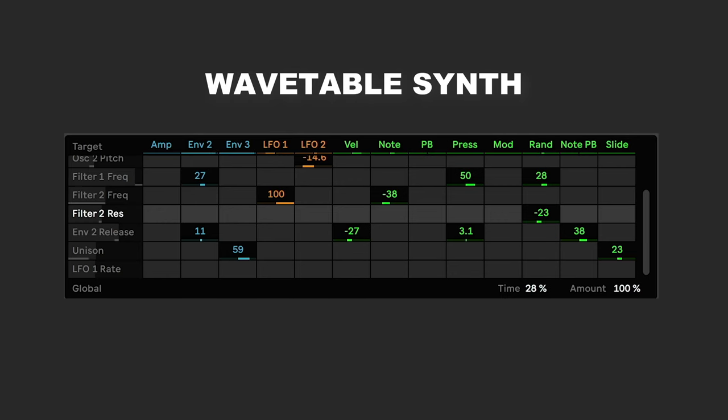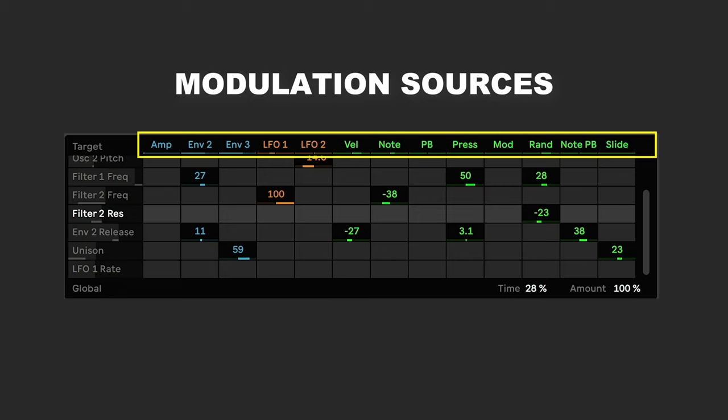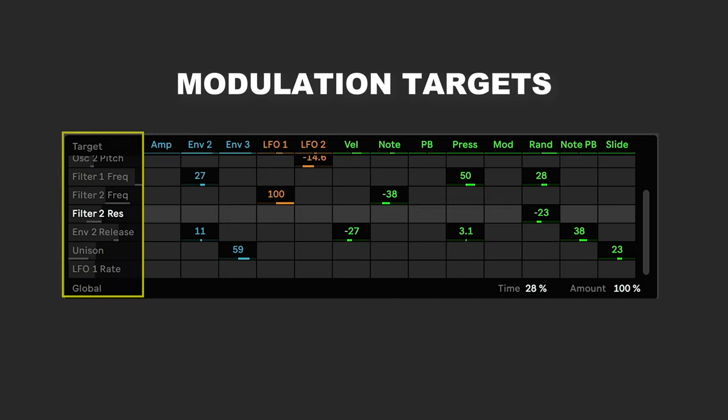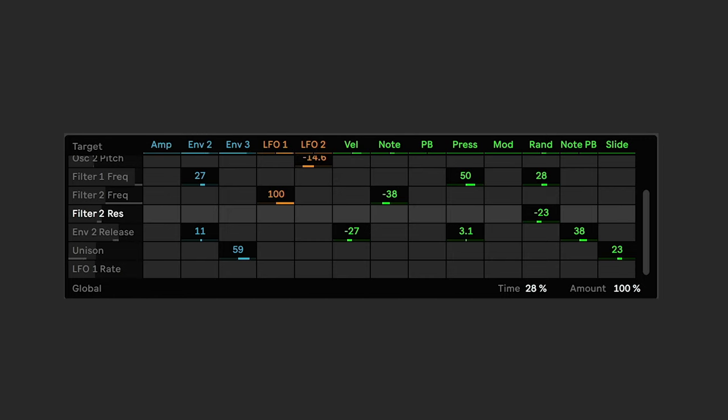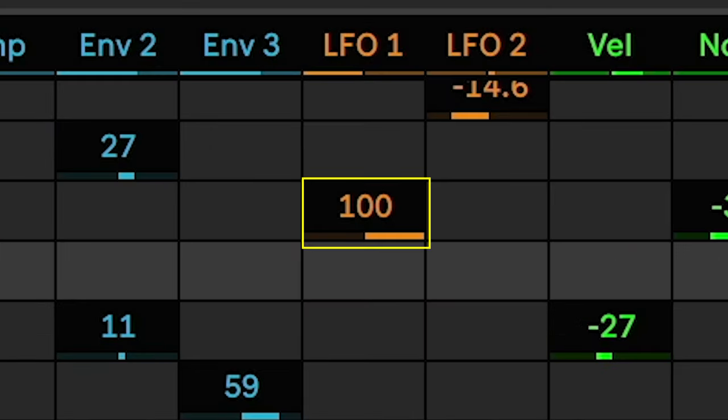This is all that we mean by modulation. Many synthesizers have a modulation matrix, which lays this out visually. Ableton's Wavetable synth, for example, gives us a grid to visually represent the modulation matrix. Across the X axis are all of the modulation sources and across the Y axis are the modulation targets. Then you just assign an amount and a direction inside one of the cells where the source and the target meet up.